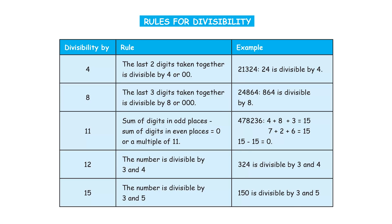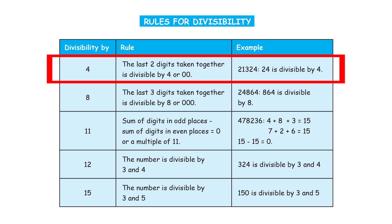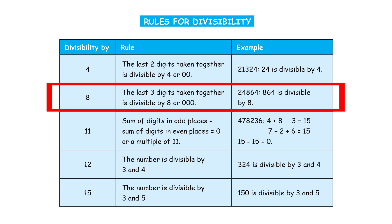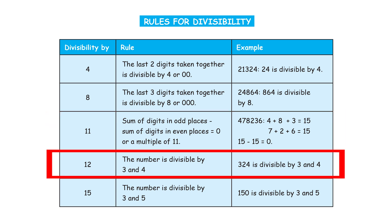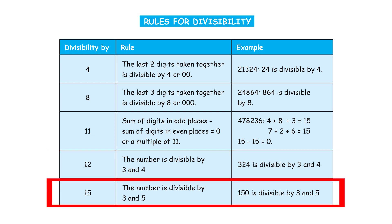To summarize all the divisibility tests, have a look at this table. Today we have seen the divisibility test by 4 — the rule is that the last 2 digits taken together should be divisible by 4. For 8, the last 3 digits taken together should be divisible by 8. For 11, take the sum of digits in odd places minus the sum of digits in even places; if that is 0 or a multiple of 11, the number is divisible by 11. For 12, the number must be divisible by both 3 and 4. For 15, the test is divisibility by both 3 and 5.